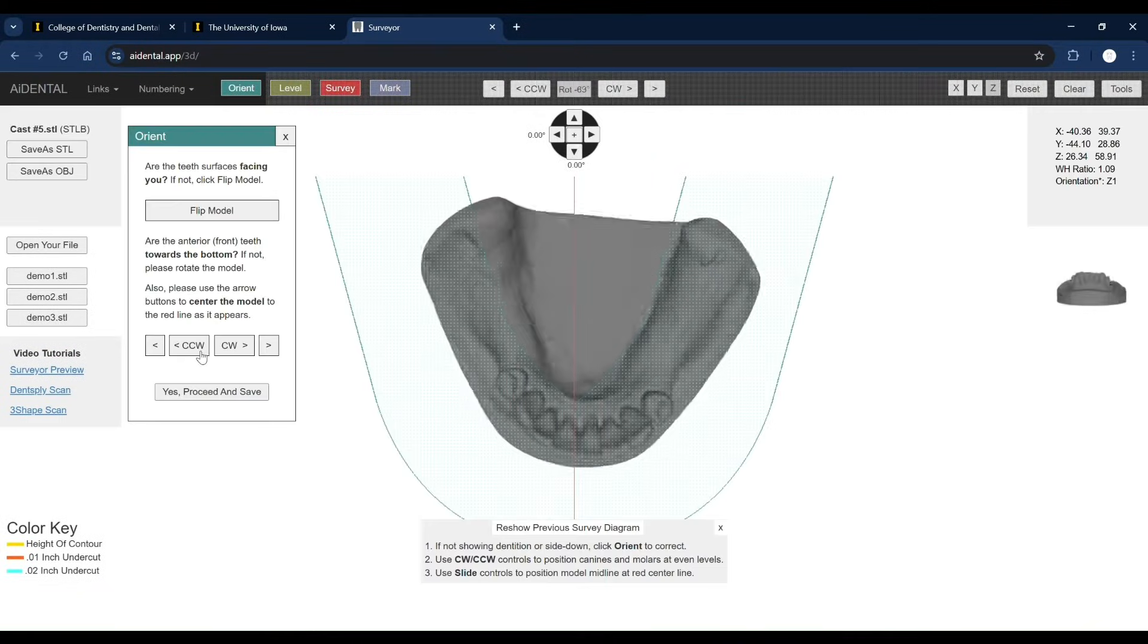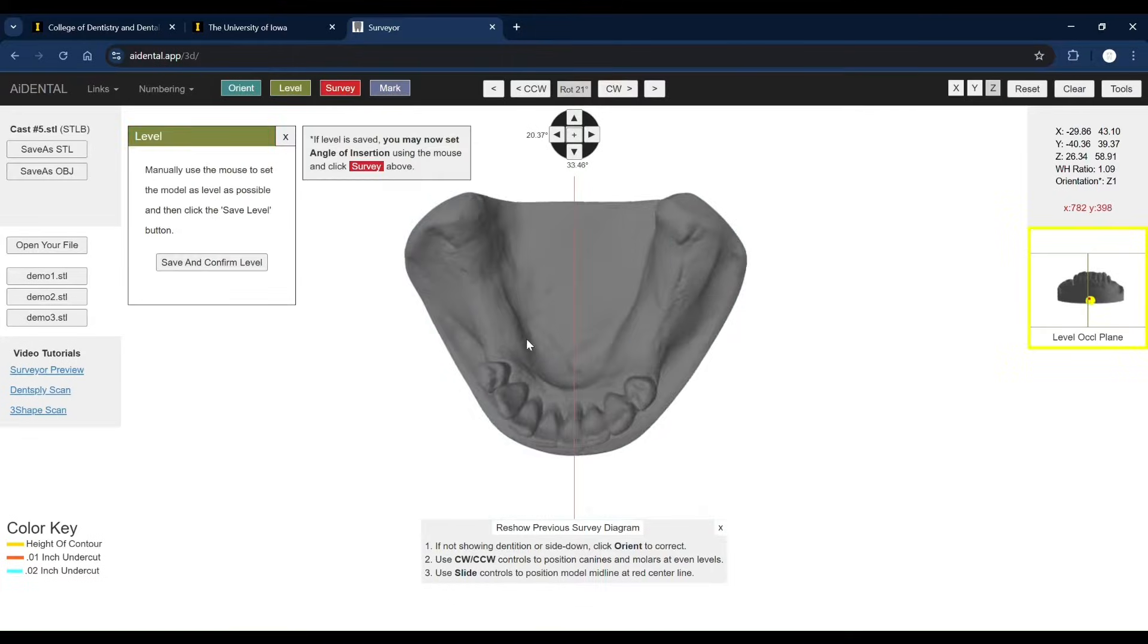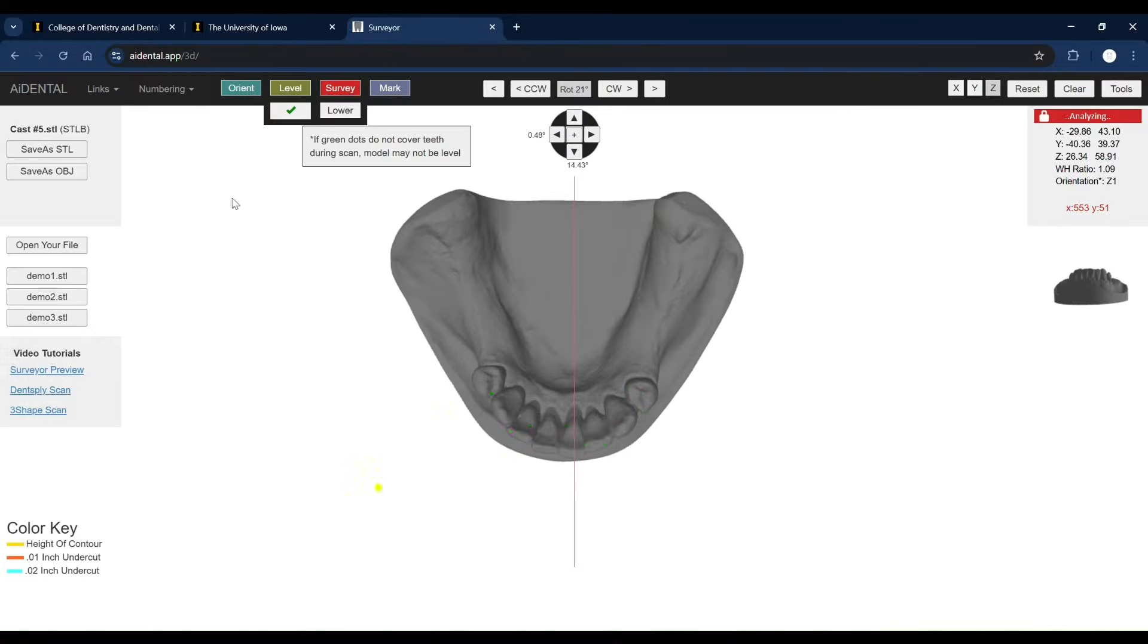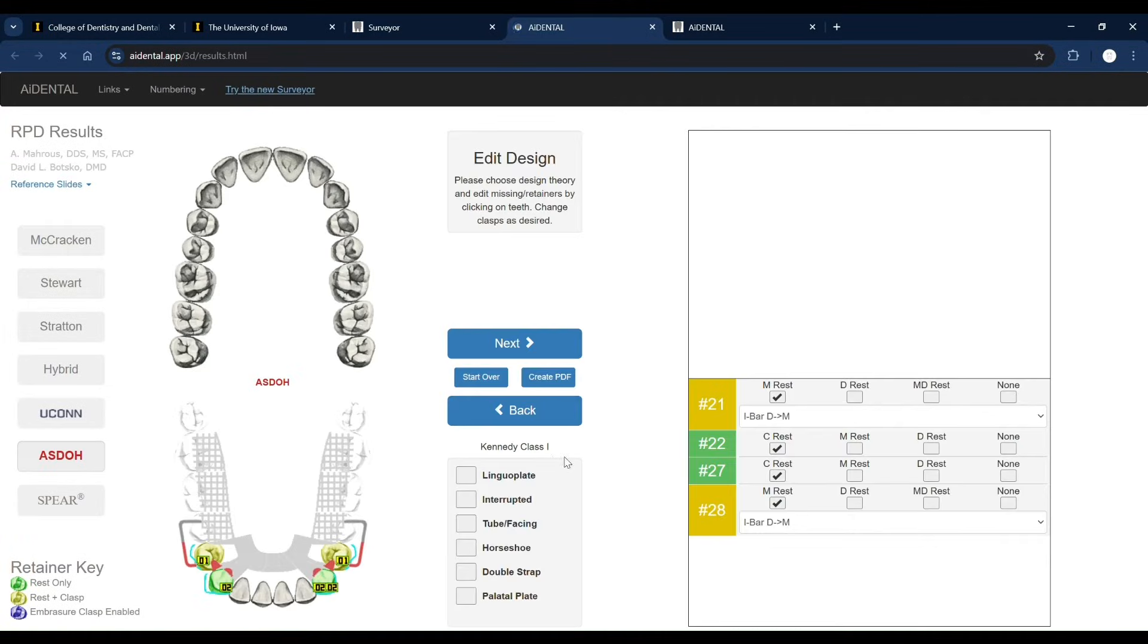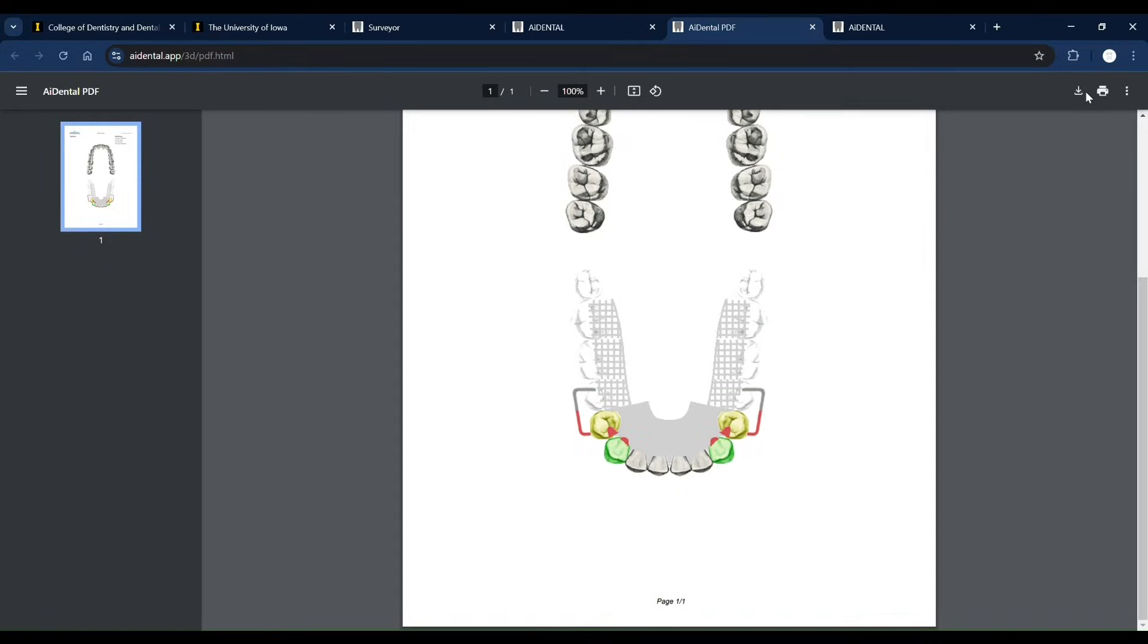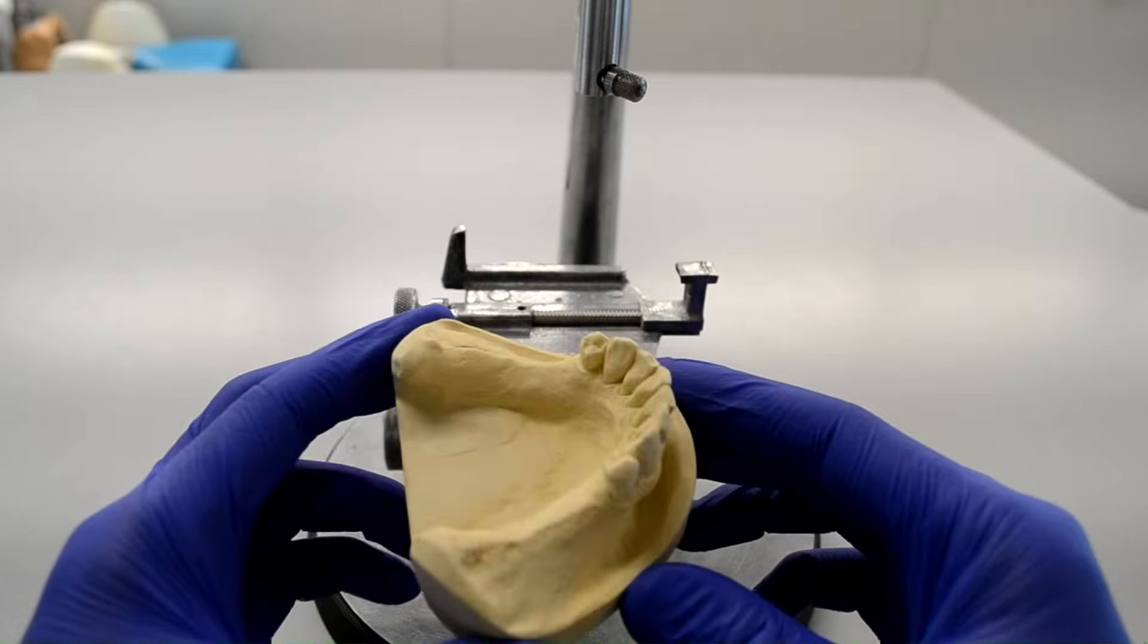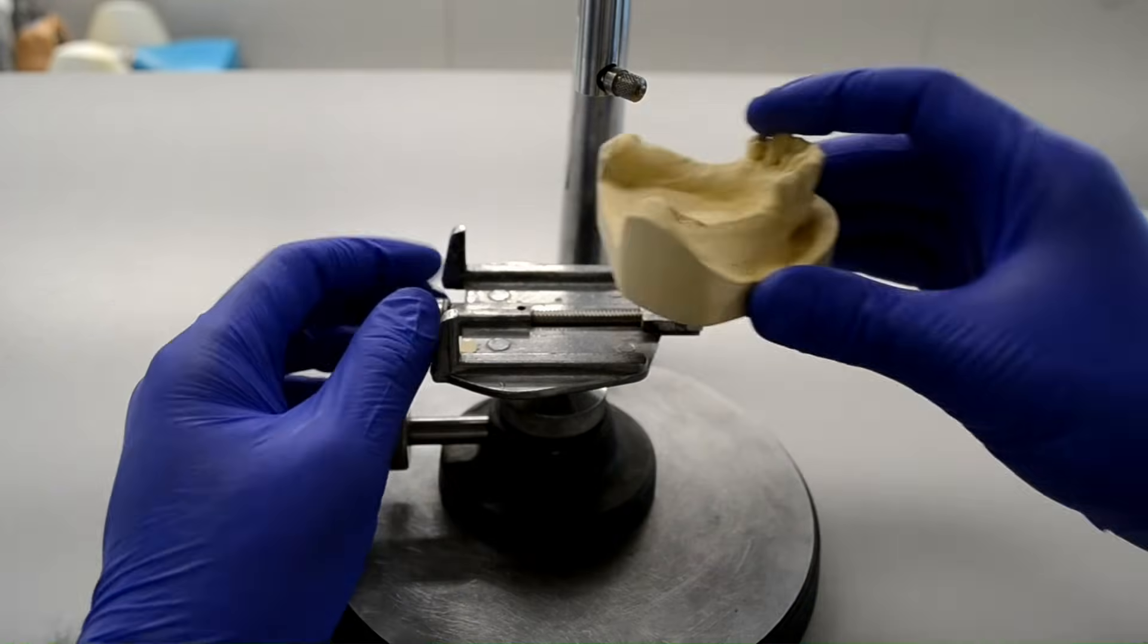If you're using an intraoral scanner for your diagnostic appointment, you could use the free online AI Dental Surveyor and Designer, which would allow you to virtually survey and design your cast. We will leave a link in the description for the software and a video demo. However, if you're doing this the analog way, then follow along this video to learn how to survey using the NAY Surveyor and draw your design on the cast and on paper.